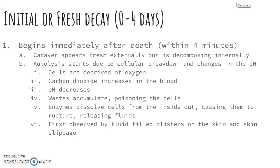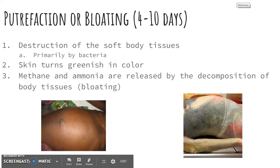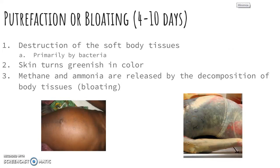Putrefaction or bloating is the destruction of soft body tissues by bacteria. You will typically see it in the intestines first, as the intestines carry the most bacteria in our body. They start to break down and give off gases like methane and ammonia, which cause the body to bloat. In the picture on the left you can see the bloating of the stomach, and in the picture on the right you can see the greenish color and also the lividity of the body.